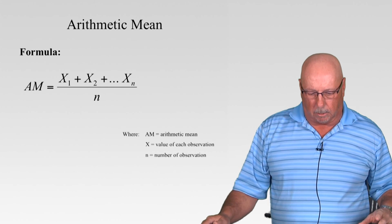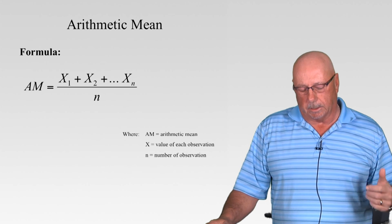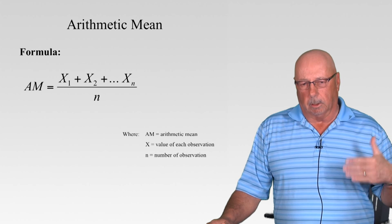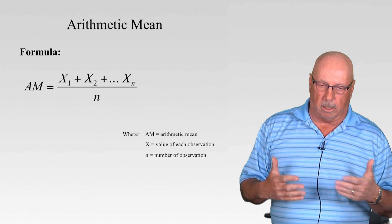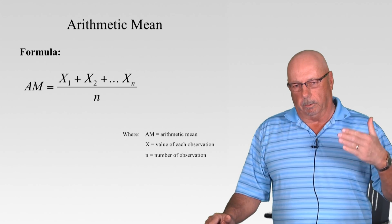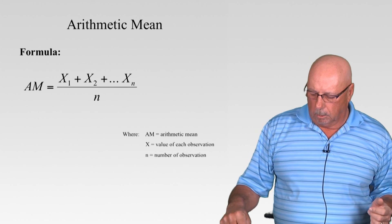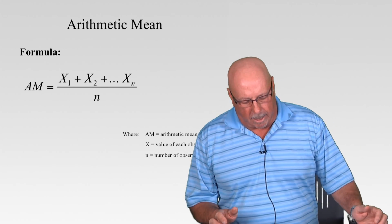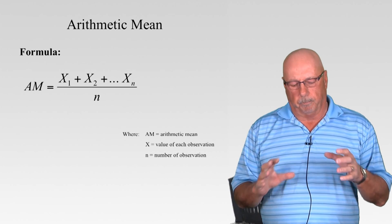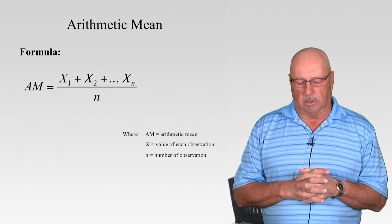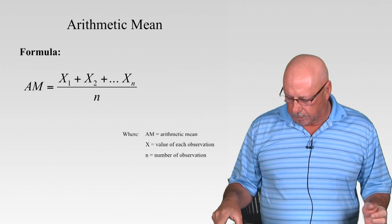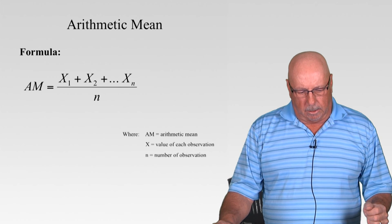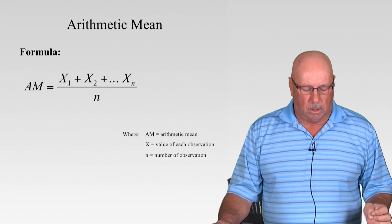This last session before the exam is going to be a review of statistics. In industrial hygiene we generate lots of data and do repetitive sampling. Each time you go out and do a sampling event, even though it's the same activity and process, you will inevitably come up with a different number. That's the necessity for a basic review of statistics and how they apply in the industrial hygiene field.